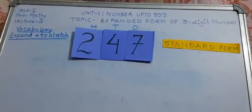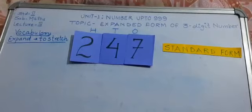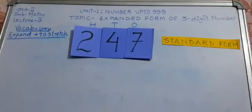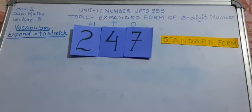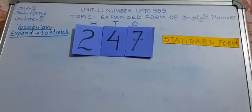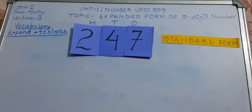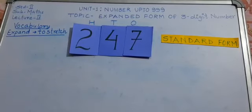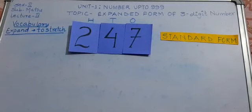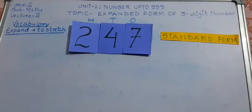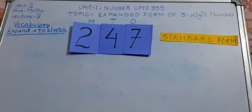Good morning students. Today is our fourth lecture. In the previous lecture, we have learned how to build a three-digit number, how to write its number name, and how to write the numeral of the number name.